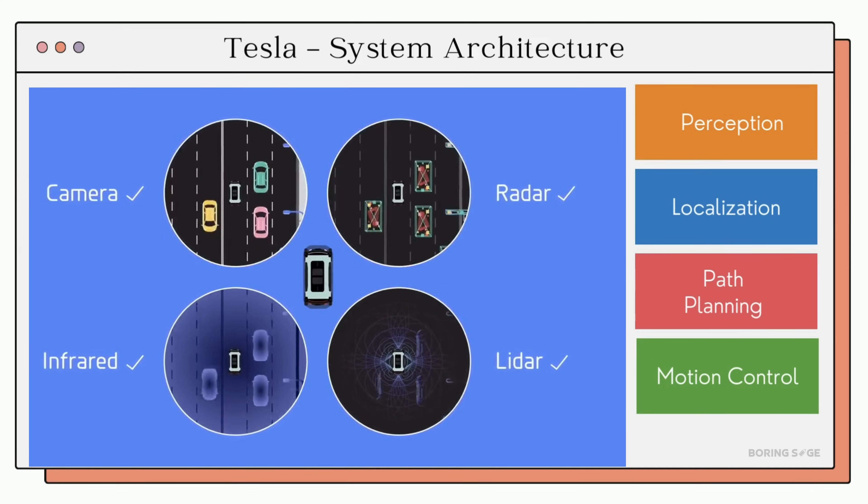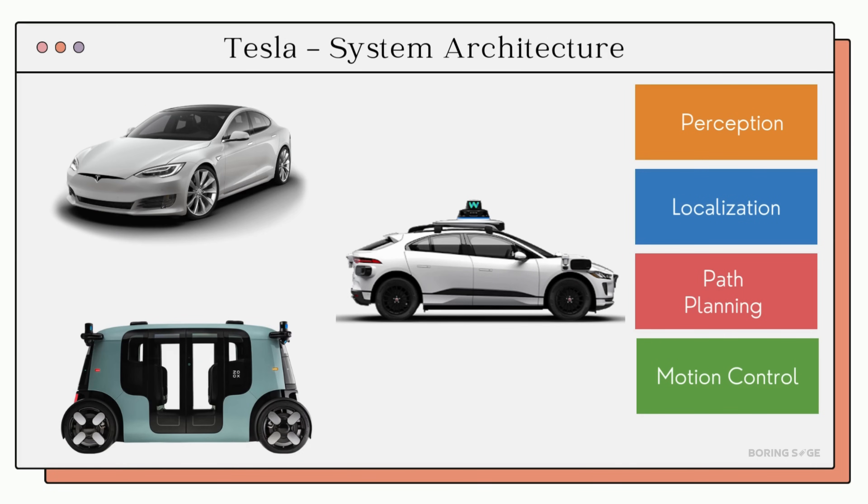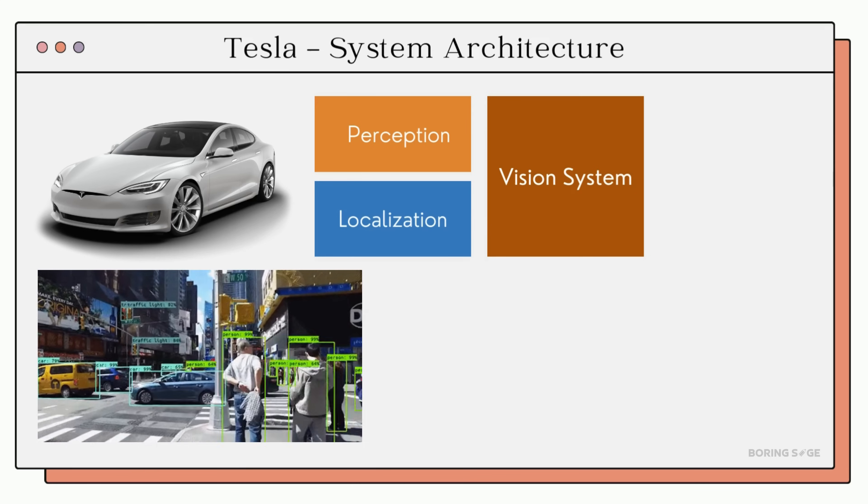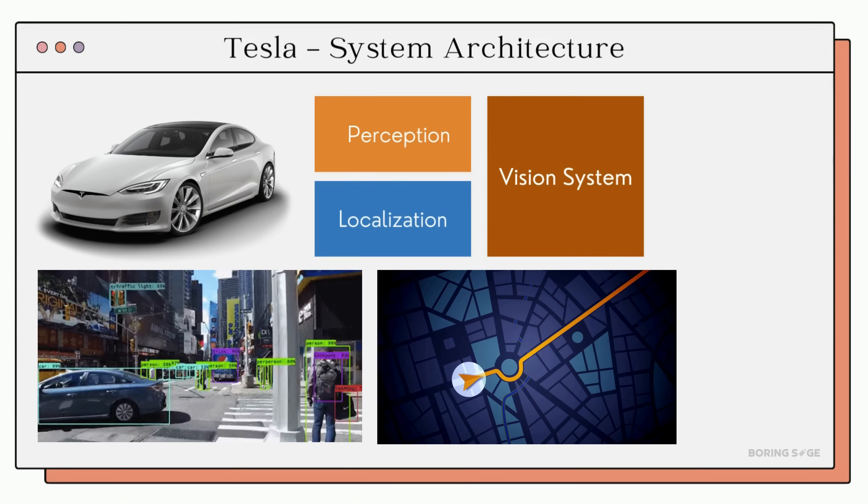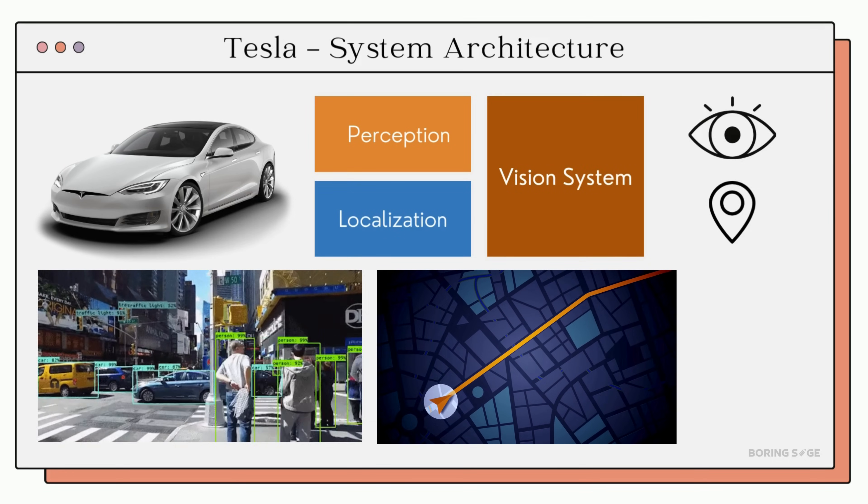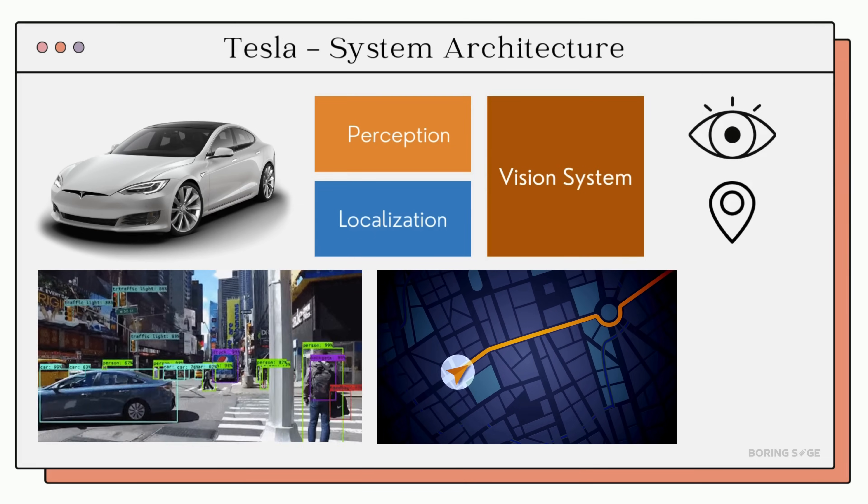With this standard architecture in mind, let's now explore Tesla's unique adaptation of this framework. Tesla's self-driving architecture introduces two key distinctions. First, Tesla merges the perception and localization functions into a unified vision system. This vision system is responsible for both seeing the environment and locating the vehicle within it.